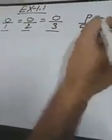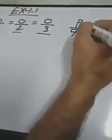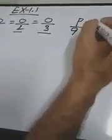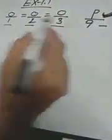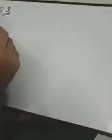p by q means p is indicating the numerator and q is indicating the denominator, which I have already written. I think you have understood the question. Now, move to question number 3.